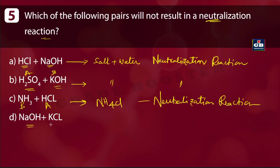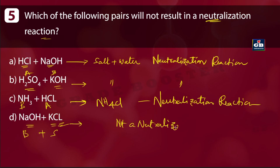The last pair is NaOH + KCl. NaOH is a strong base, but KCl is a salt — not an acid. Neutralization is a reaction between an acid and a base forming salt and water. Here it is a reaction between a base and a salt, so this is not a neutralization reaction. Therefore, option D is the correct answer.